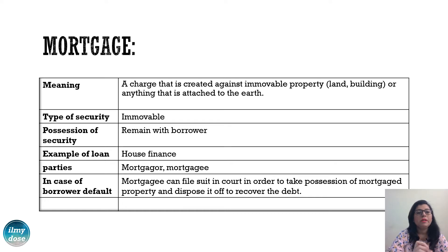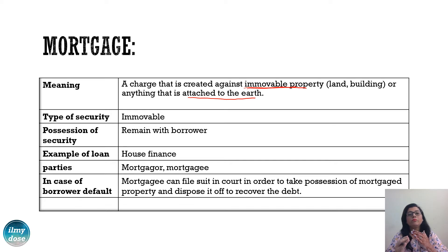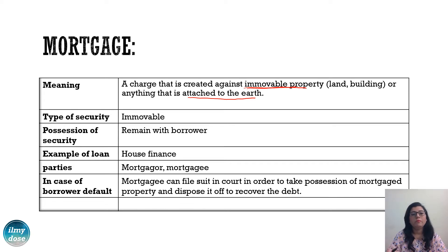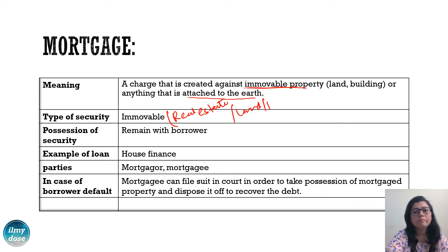The meaning of mortgage: a charge that is created against immovable property, or anything that is attached to the earth. Immovable property means any property that we cannot move from one place to another, like land or building — we cannot move a building or land from one place to another. So we call them immovable property. The type of security used in mortgage is immovable property, like real estate, land, and building.